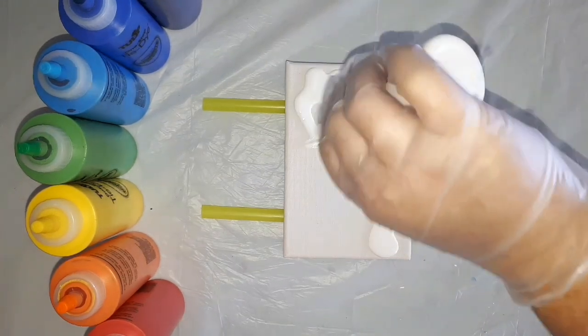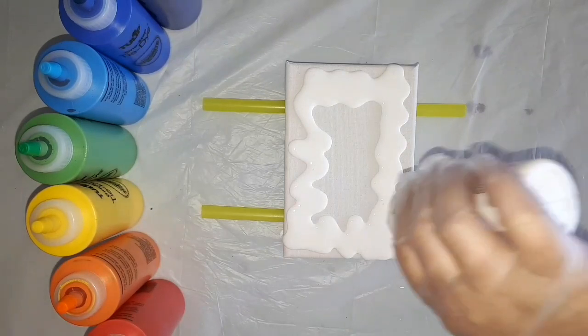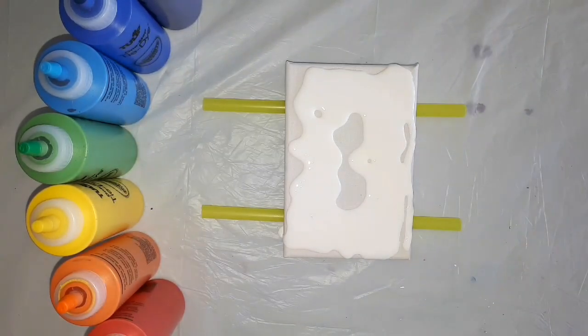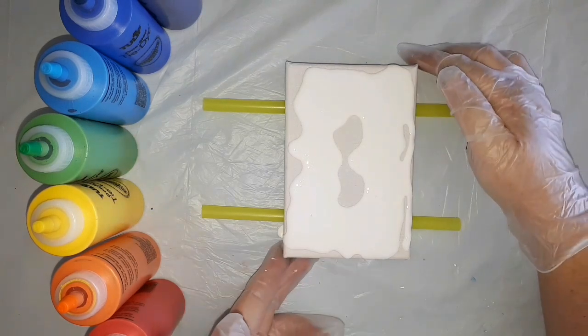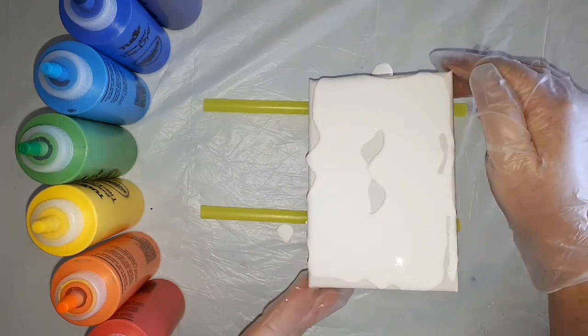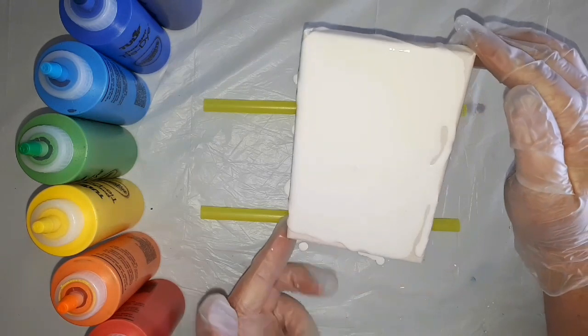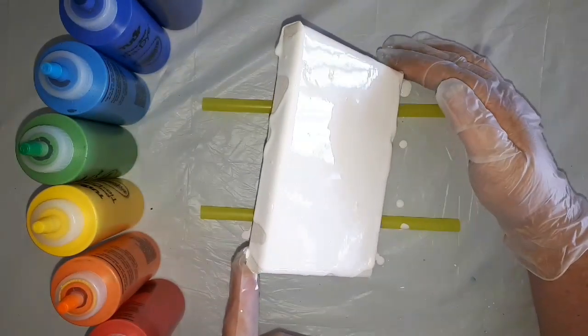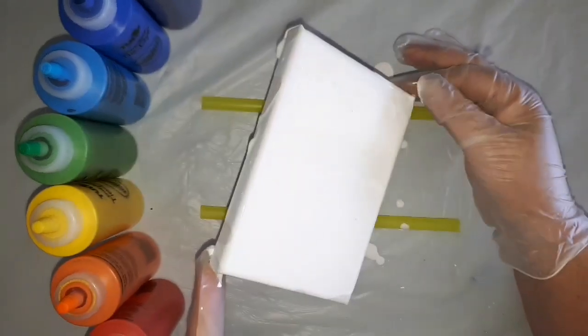So I'm going to start by covering my canvas in white. I have pre-mixed all the paints with my PVA and water pouring medium and made sure that all are the right consistency.